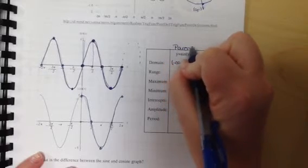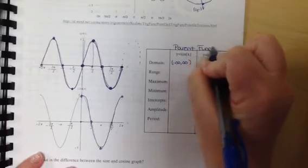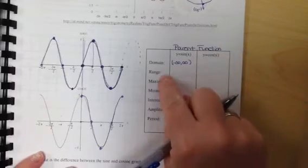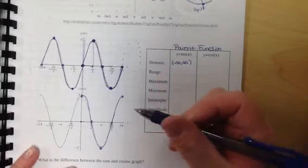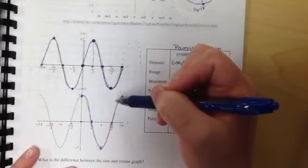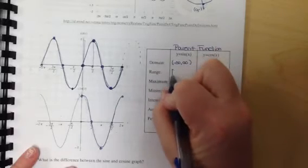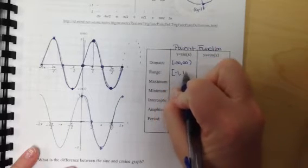This table is based off the parent function, not some transformed version. The range is how high and low the graph goes. The graph goes up to one and down to negative one, so my range is [-1, 1].